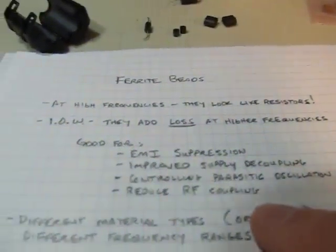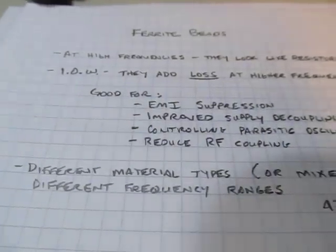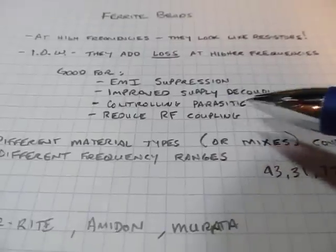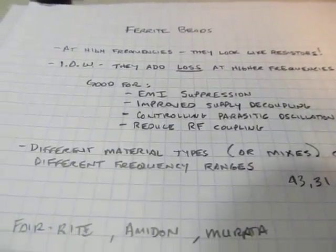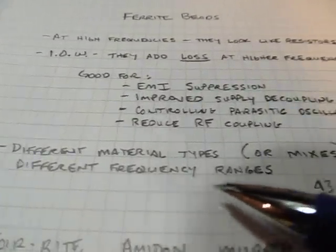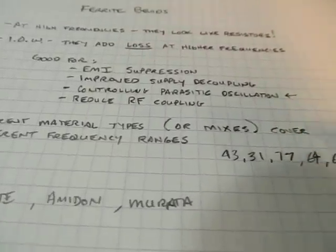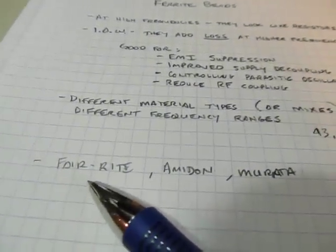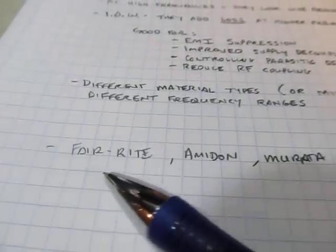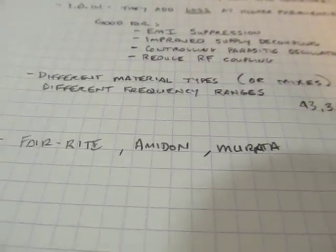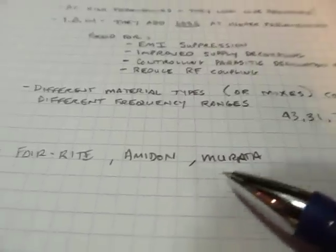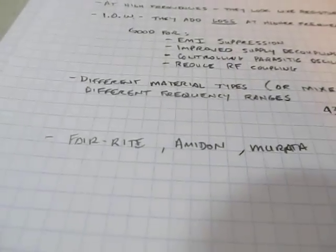Another important application is reducing RF coupling — for example, if you're designing an audio amplifier for a microphone that goes into an RF transmitter, you might use ferrite beads on the power supplies and audio lines to keep the RF signal from coupling back into the amplifier. There are different material types, sometimes called mixes — mixes like 43, 31, and 77 — each good for particular frequency ranges. Popular manufacturers include Ferroxcube, Fair-Rite, Amidon, and Murata, and they have a lot of application information about which material mixes are suitable for various frequencies.